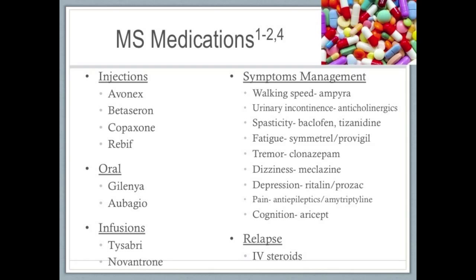Gilenya and Aubagio are the oral medications currently approved, and BG-12 is another oral medication expected on the market soon. Though compliance is easier with oral medications, there are still potentially serious side effects, such as slow heart rate after the first dose or macular edema with Gilenya. The infusion medications include Tysabri and Novantrone, given once a month, but these also come with potentially serious side effects. PML, a rare but usually fatal brain disease, can occur with Tysabri, especially if an individual has a positive JC virus. Novantrone has been approved for secondary progressive MS but can cause heart and liver damage or leukemia. IV steroids are often given after an acute relapse, but chronic steroid use typically has more disadvantages than advantages. Symptom management medications also exist to help prevent disability and maintain health.